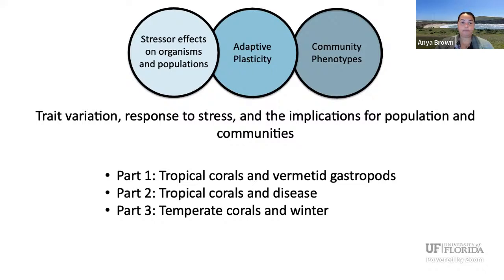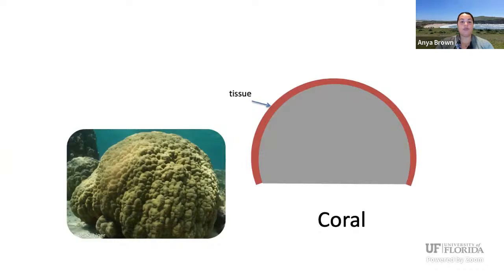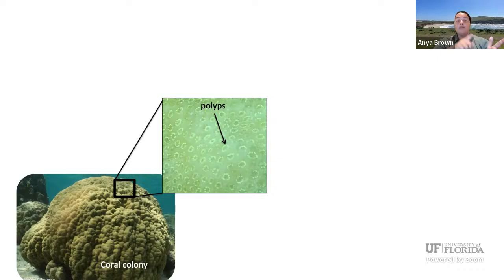Today I'm going to focus on trait variation, responses to stress, and the implications for populations and communities — in three parts. I'll start with two examples from tropical coral systems and then end with an example from a temperate coral system. First, I want to get us all on the same page about what a coral is. This is a picture of a massive Porites coral. If we were to do a cross section of this colony, we would see a thin tissue layer and its skeleton — the live section is a very small layer. If we zoom in, we see small yellow rings — those are the polyps. Corals are a colony of interconnected polyps.